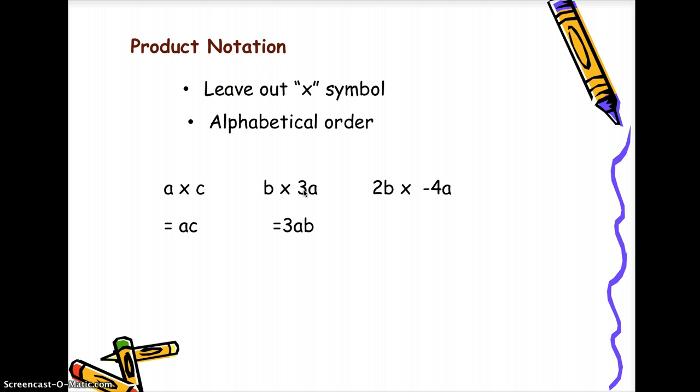Another example, 2b times negative 4a. Look at the constants. So multiply 2 to negative 4 which is negative 8 and then write a first and then b. So your answer should be negative 8ab.